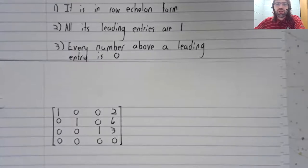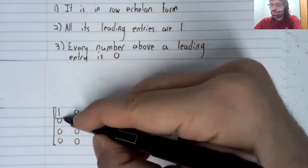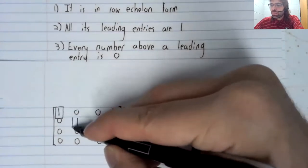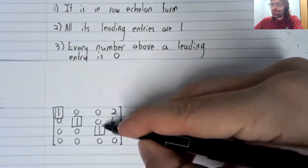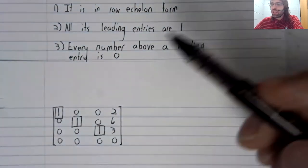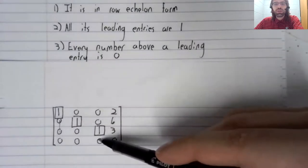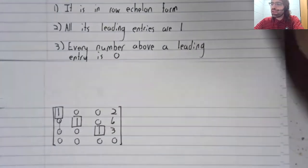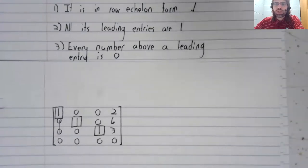And everything below a leading entry has to be zero. We have three leading entries. And it is true that everything below each of them is zero. So check.